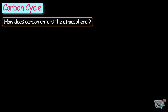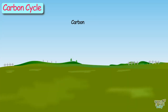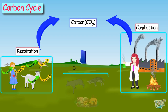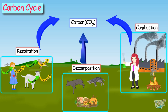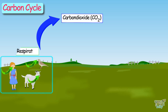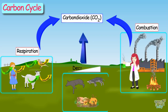In this lesson, we will be learning about the carbon cycle. First of all, how does carbon enter the atmosphere? Carbon enters the atmosphere as carbon dioxide from three sources: respiration, combustion, and decomposition.